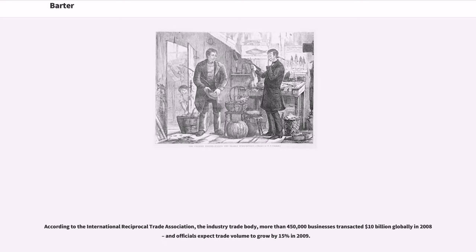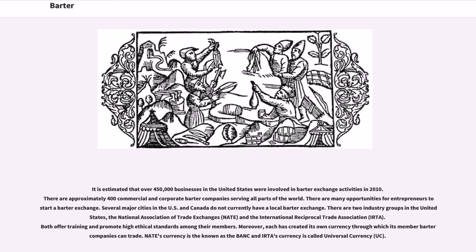According to the International Reciprocal Trade Association, the industry trade body, more than 450,000 businesses transacted $10 billion globally in 2008, and officials expected trade volume to grow by 15% in 2009. It is estimated that over 450,000 businesses in the United States were involved in barter exchange activities in 2010. There are approximately 400 commercial and corporate barter companies serving all parts of the world. There are two industry groups in the United States: the National Association of Trade Exchanges (NATE) and the International Reciprocal Trade Association (IRTA). Both offer training and promote high ethical standards among their members. NATE's currency is known as the 'bank' and IRTA's currency is called Universal Currency (UC).